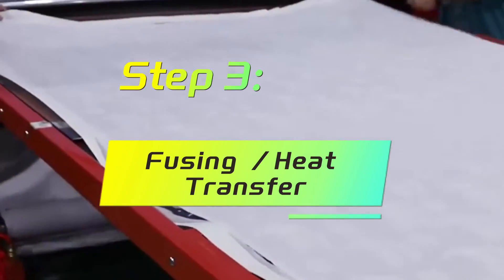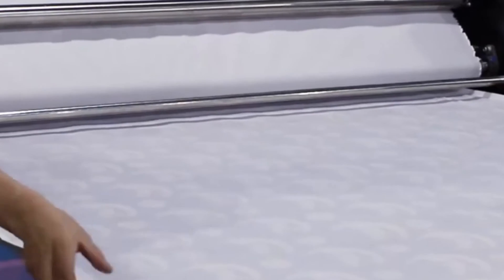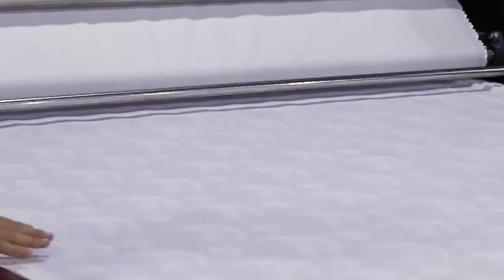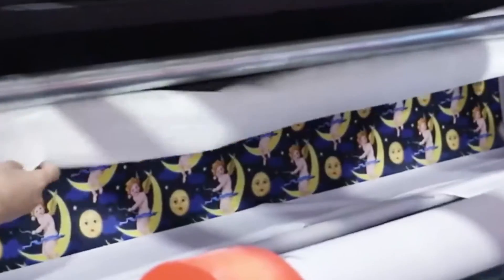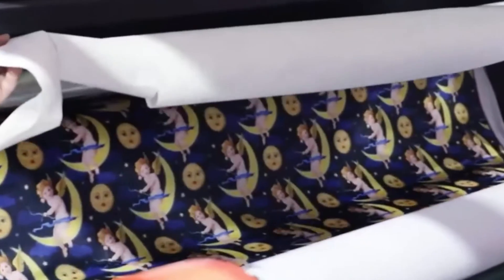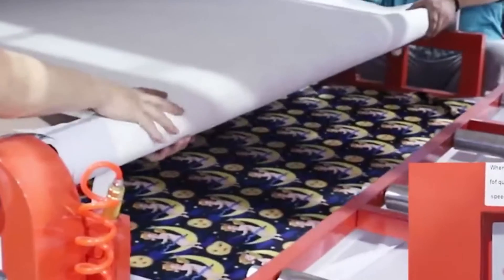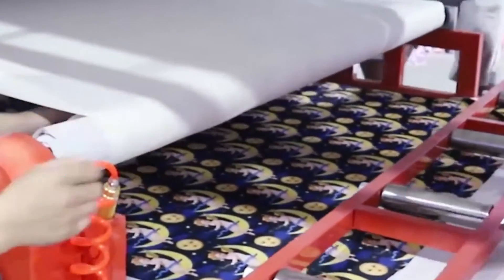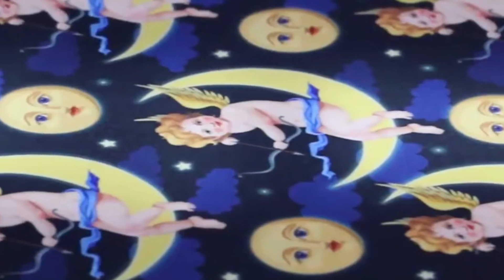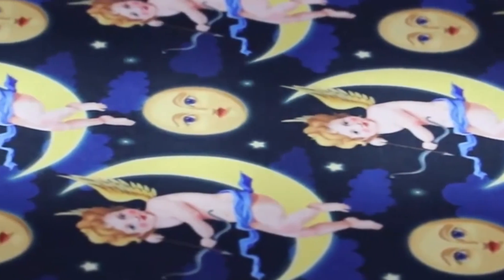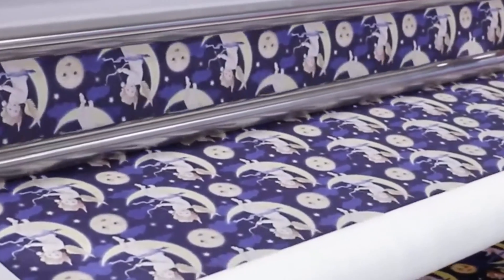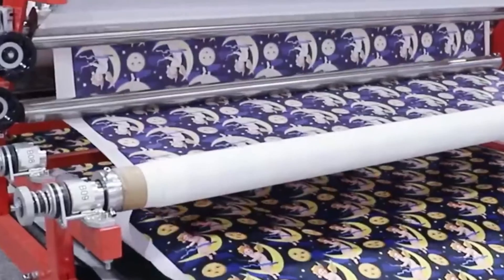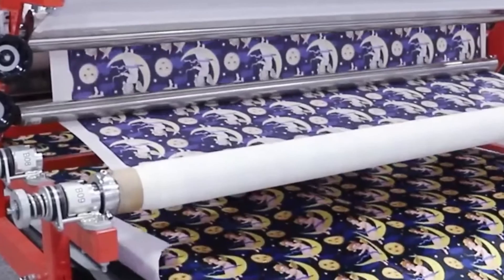Step 3: Fusing Heat Transfer. Lay the fabric to be printed flat and prepare the printing paper with the pattern. Cover the fabric with the printed paper. Stack the printing paper and the material to be printed together, then apply high temperature and pressure using hot pressing or a hot roller to release the ink from the paper and transfer it to the surface of the material.